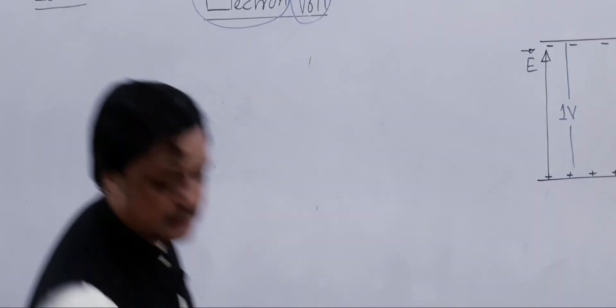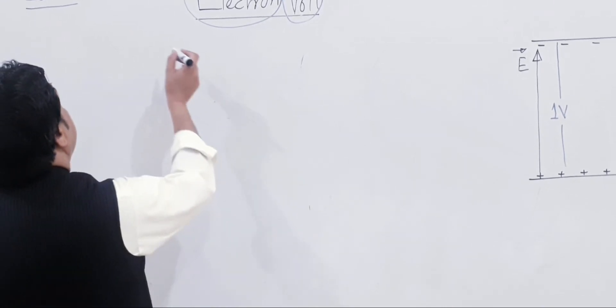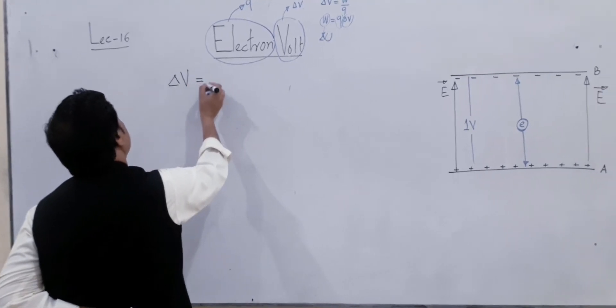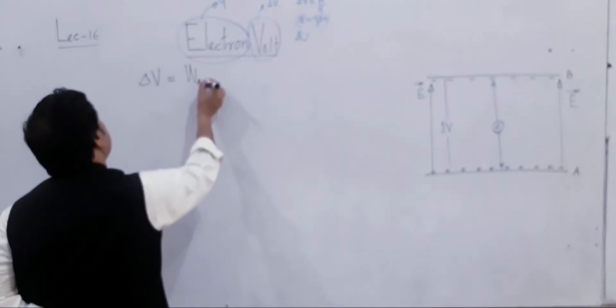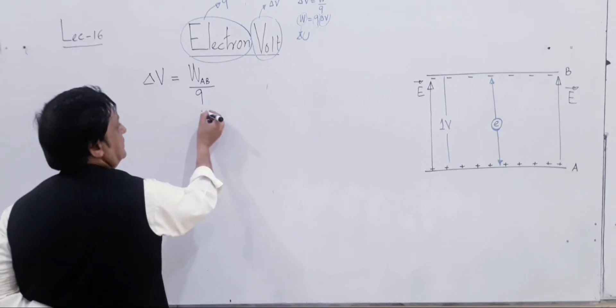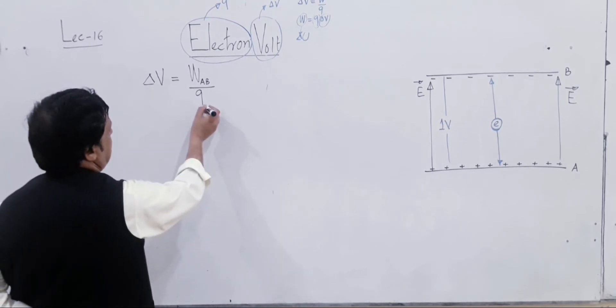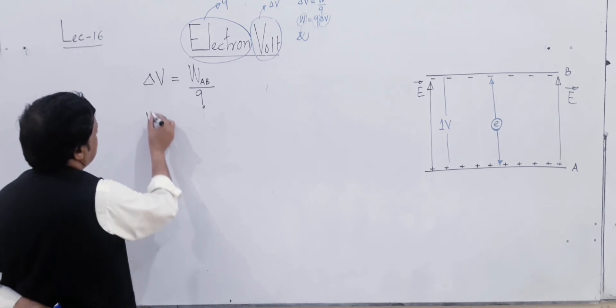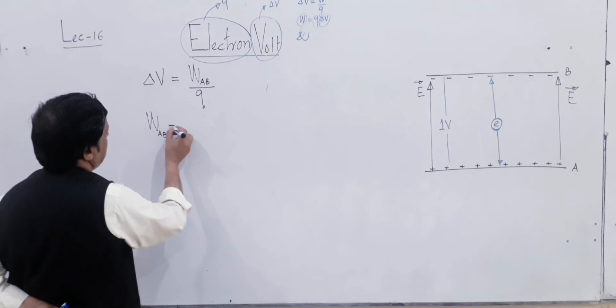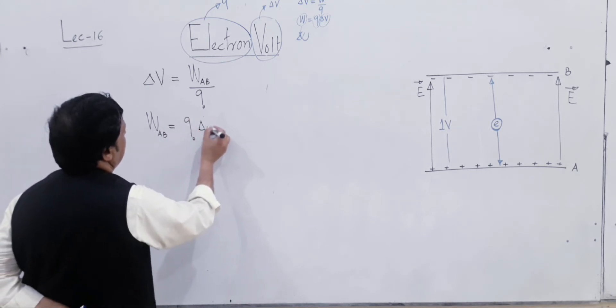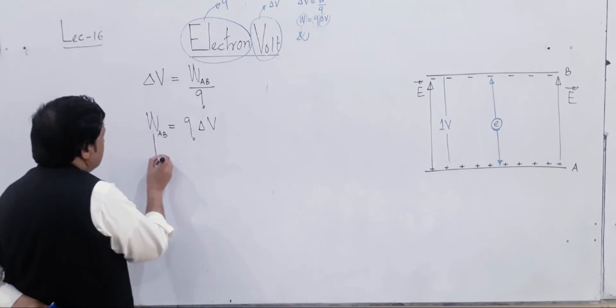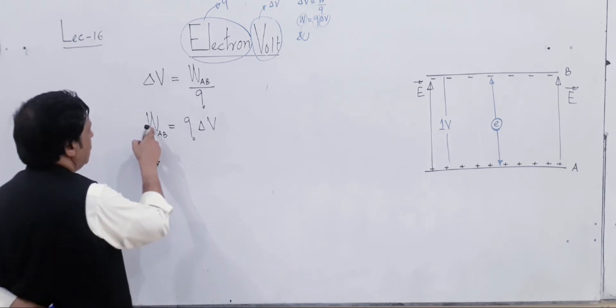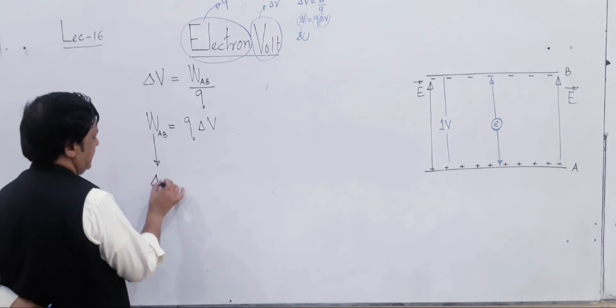Look at this. By definition, potential difference is work done from A to B per unit positive charge. If this is a test charge, work done equals q naught multiplied by delta V. By definition, according to dimensions and units, work and energy are the same thing. This is basically the energy gained.